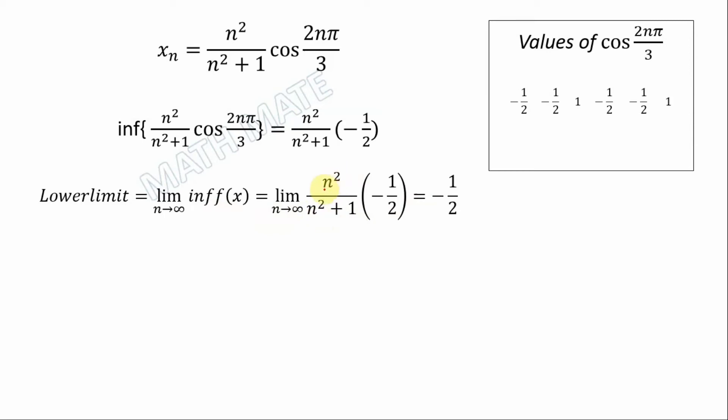We have 1 divided by 1 plus 1/n². When n goes to infinity, this goes to 1. So 1 multiplied by negative 1/2 equals negative 1/2. That's the lower limit for x_n.